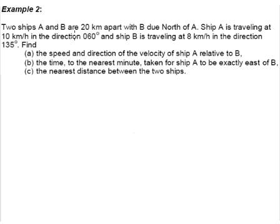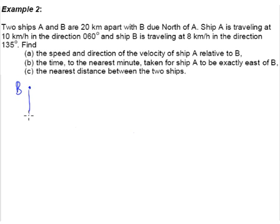Example 2. Two ships, A and B, are 20 km apart with B due north of A. The first thing to do is to get a good idea of how ship A and ship B look — where they are and how they are moving relative to each other. We call this point B, the ship B, and this will be our ship A, because B is due north of A. They are 20 km apart.